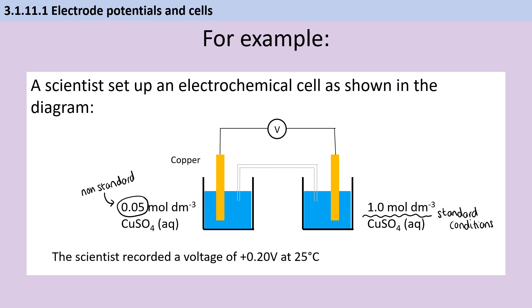If an electrochemical cell is assembled not under standard conditions, then this will affect the size of the electromotive force measured. This is why it's possible to set up an electrochemical cell that contains two half cells containing the same species, if they have different concentrations.